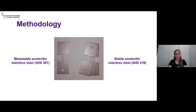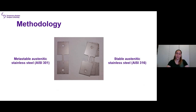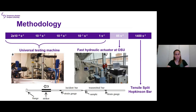The main material of my thesis is the metastable austenitic stainless steel 301. Together with it, the 316 was used as a reference material because it has a similar initial microstructure but does not undergo the phase transformation. The materials were tested in tension at a wide range of strain rates.